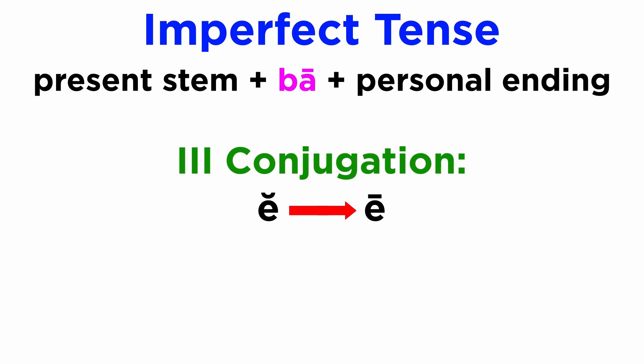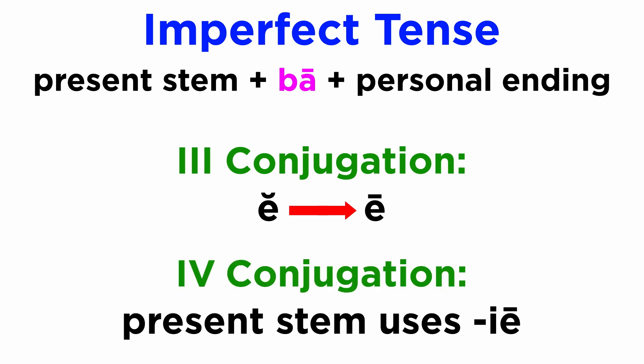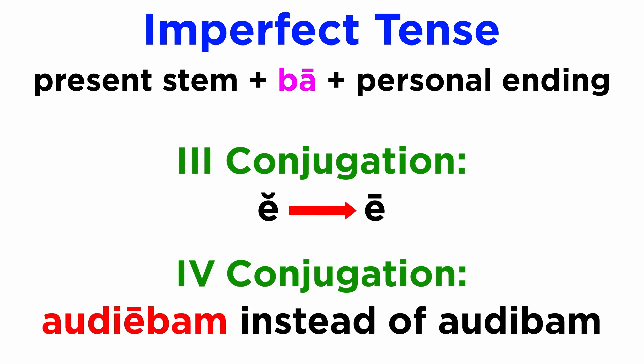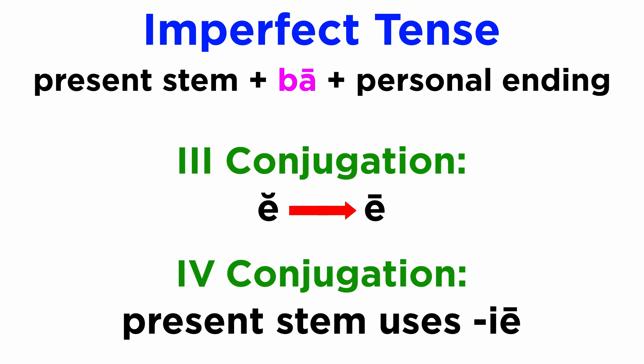In the third, the short e from the infinitive is lengthened to a long e. In the fourth, however, the present stem will be formed with ie instead of simply keeping the i, giving the form audiebam instead of the expected audibam. Once you have the correct stem, adding the known infix ba and the personal endings will be very simple.